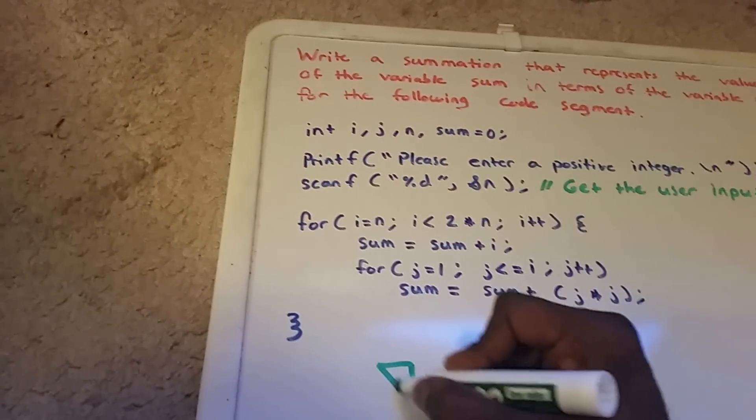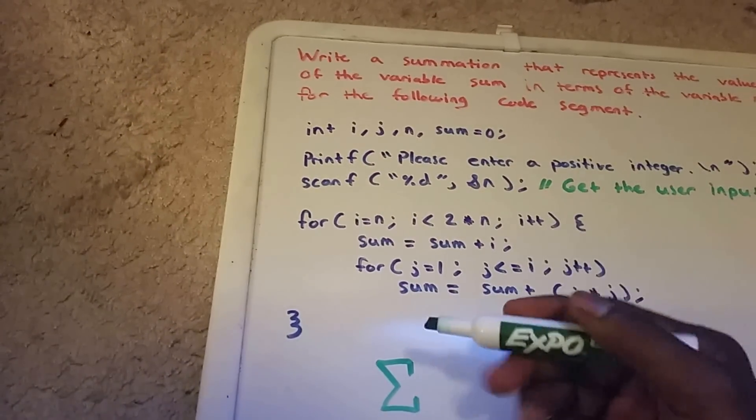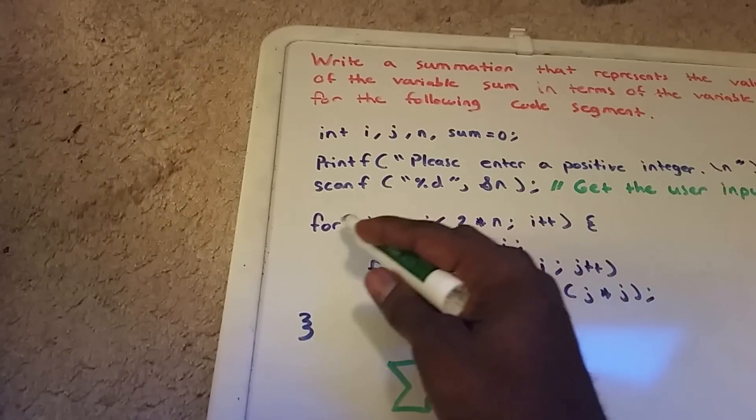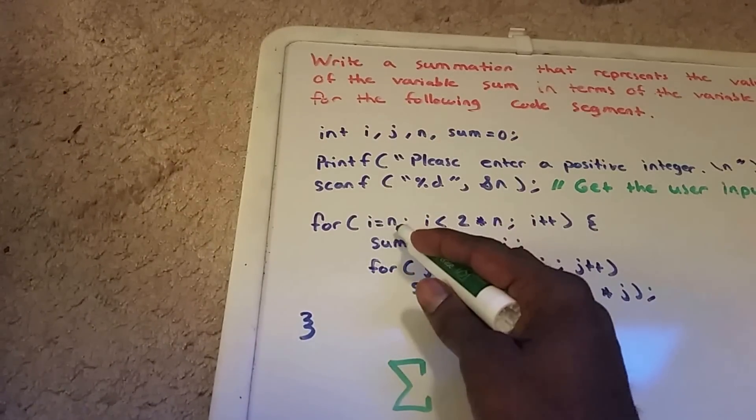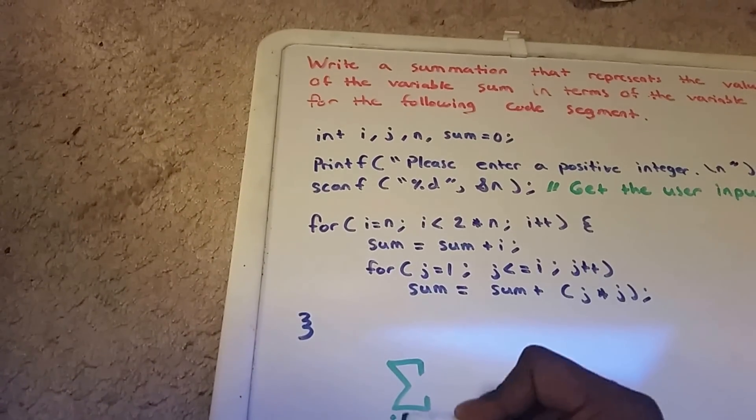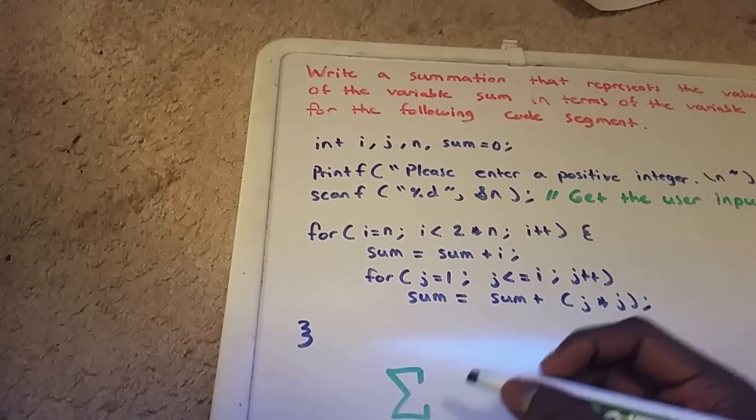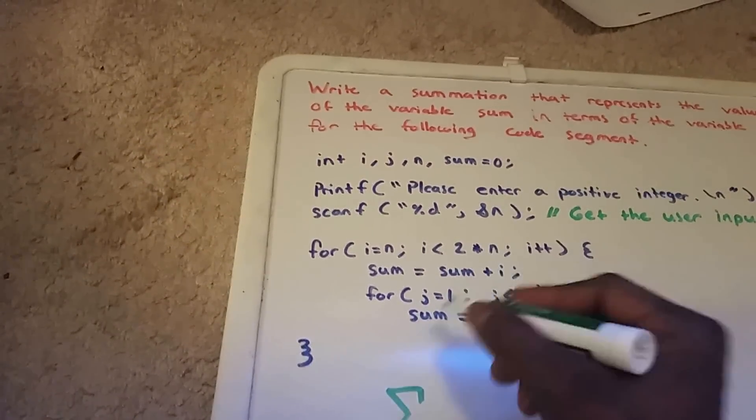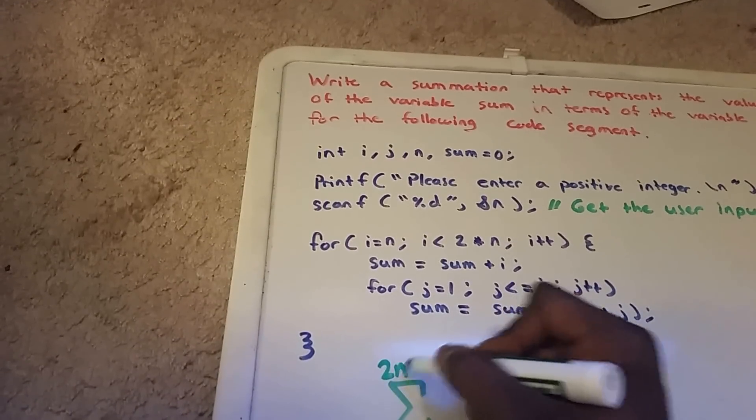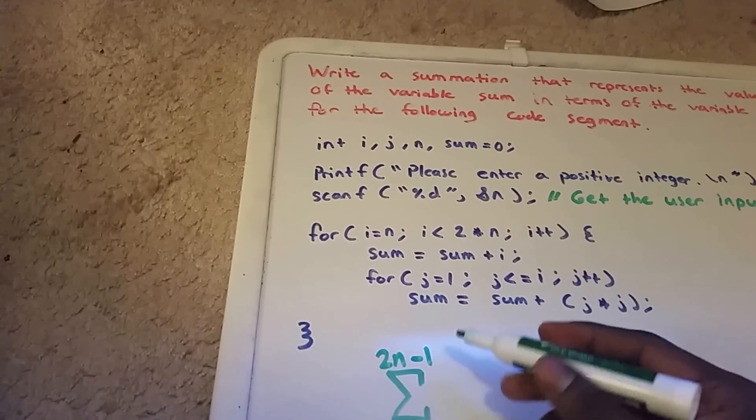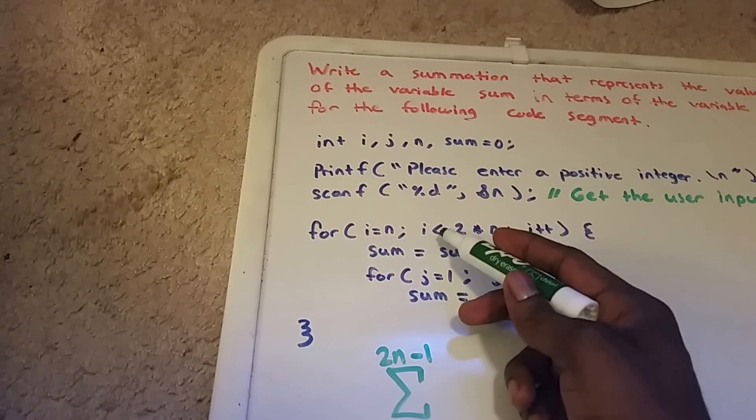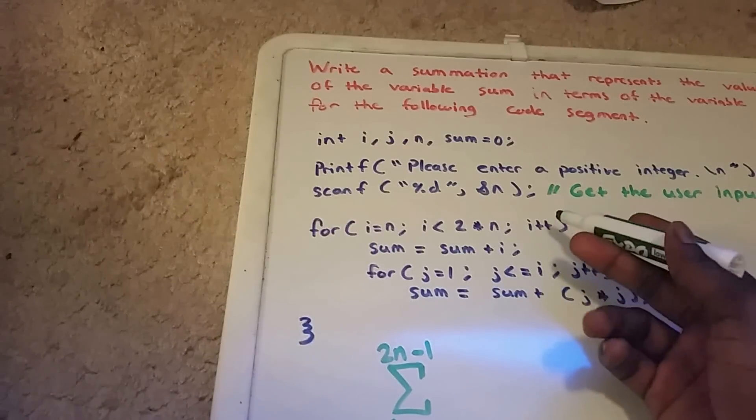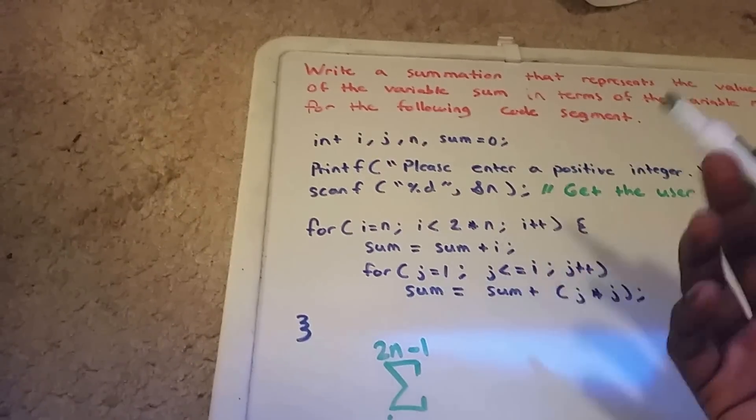We have a for loop, and a for loop can always be represented by summation. Our first for loop goes from i equals n to i less than two times n, so it doesn't go to two times n, it goes one less. If this was an equal sign, it would go all the way to 2n. Then i increases by one each time, so that's the iteration.